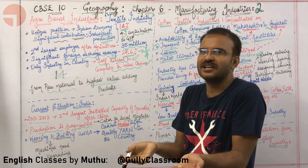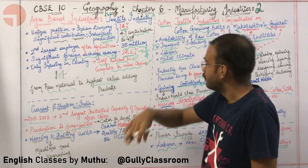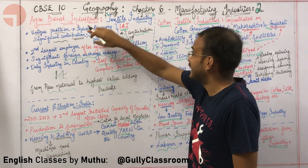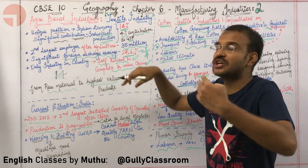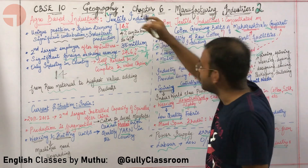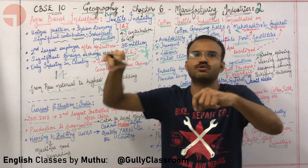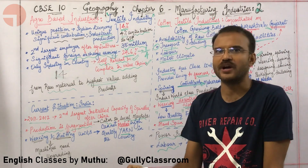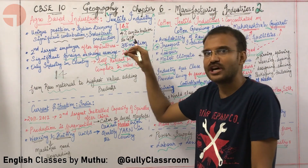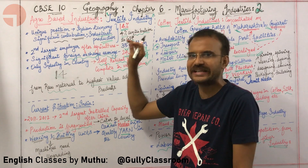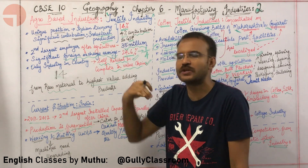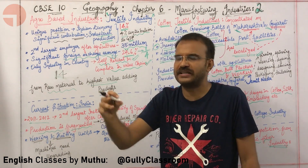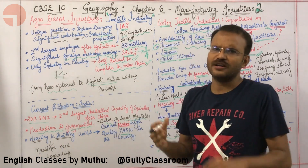Why is 4 significant? Because textile industries are also contributing 4% to the GDP — the Gross Domestic Product. So once more, textile industries contribute 4% to the GDP.